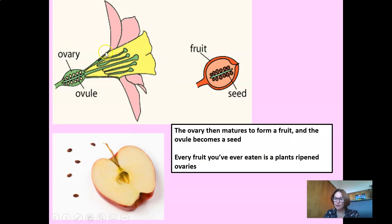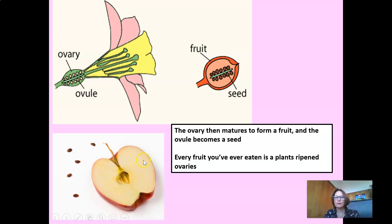Inside the ovary are the ovules that have now been fertilized by one male cell. The ovary matures to form the fruit, and each little ovule becomes a seed. Every fruit you've ever eaten is a plant's ripened ovary — isn't that interesting, Grade 7s, when you look at it that way?